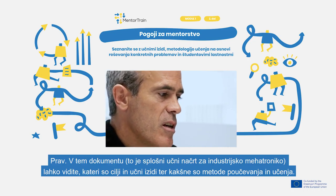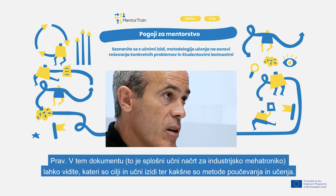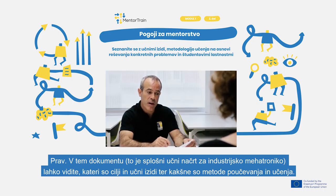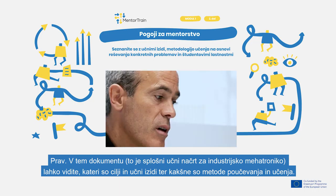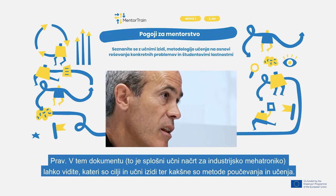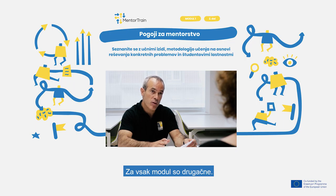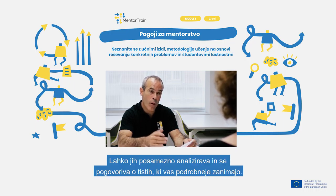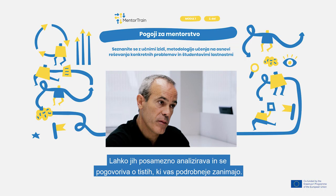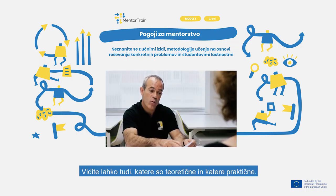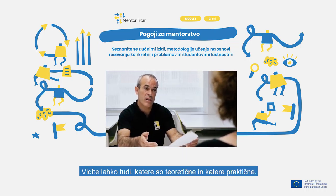In this document — this is the general curricular design of industrial mechatronics — you can see the objectives and the learning outcomes as well as the teaching and learning methods. Every module has its own ones and we can analyze them one by one and discuss those you would like to know better. We can also see which ones are theoretical and which ones are practical.